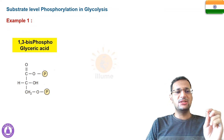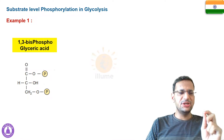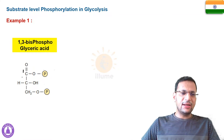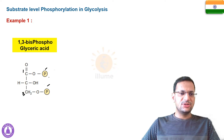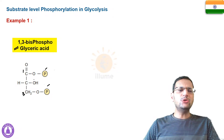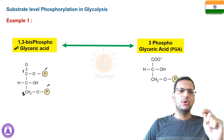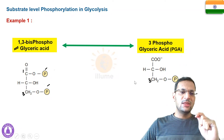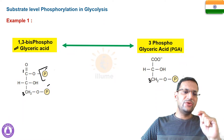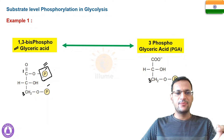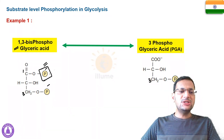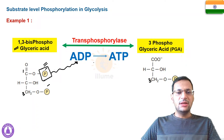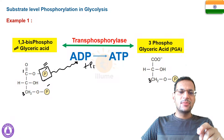In glycolysis, the first example is the reaction in which 1,3-bisphosphoglyceric acid is converted into 3-phosphoglyceric acid (3-PGA). In 1,3-bisphosphoglyceric acid, phosphate groups are attached to carbon number 1 and carbon number 3. Through a reversible reaction it is converted into 3-PGA, where phosphate is attached only to the third carbon. The phosphate on carbon number 1 is released from the substrate.